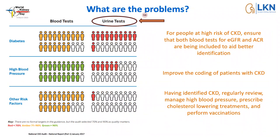Going back to the issues with urine tests — this slide from the national CKD audit shows how much better we are at doing blood tests versus urine tests. For people with diabetes, the vast majority have blood tests done but very few have urine tests done, and that's amplified across other disease cohorts. For high blood pressure, very few manage to get urine tests done. Urine testing is really an area of focus and a key take-home message.